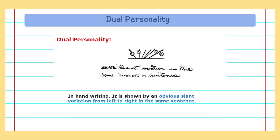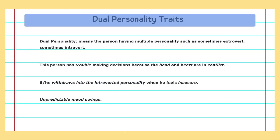Let's see how we can predict dual personality through handwriting. In this handwriting sample, the slants within a single sentence vary from left to right — the alphabets shift direction within the same sentence. If someone writes like this, you can predict that person is facing dual personality.